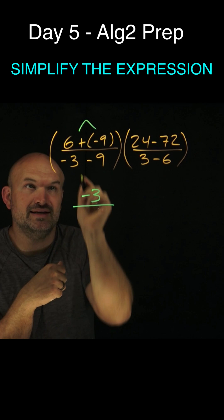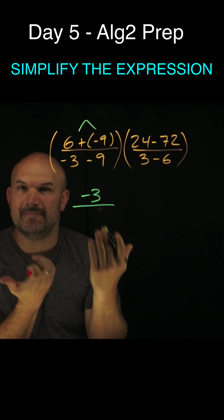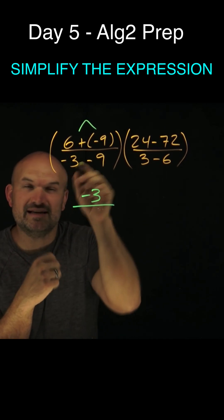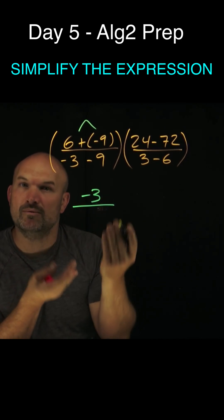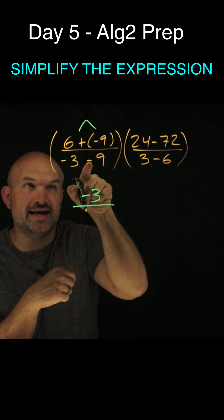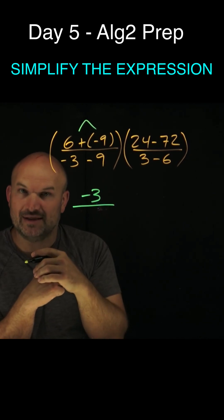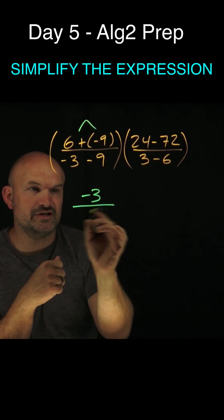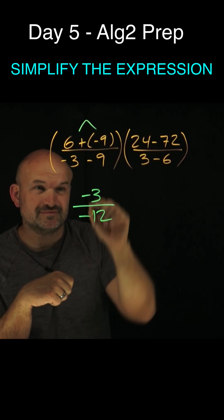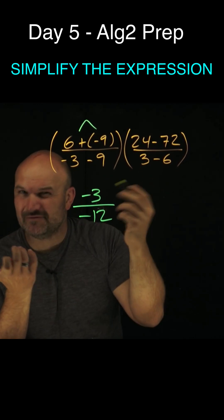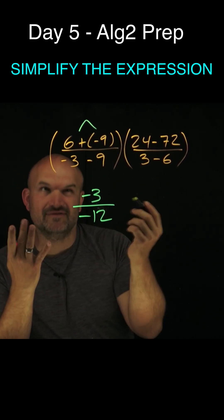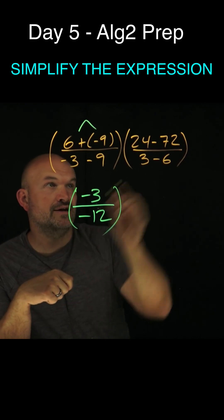Now let's look at the denominator: negative three minus nine. Think of negative as like you owe me money. You owe me three dollars and now you're going to borrow nine more dollars — now you're going to owe me twelve dollars. Notice the negative divided by negative is going to be positive, but we'll worry about that in just a second.